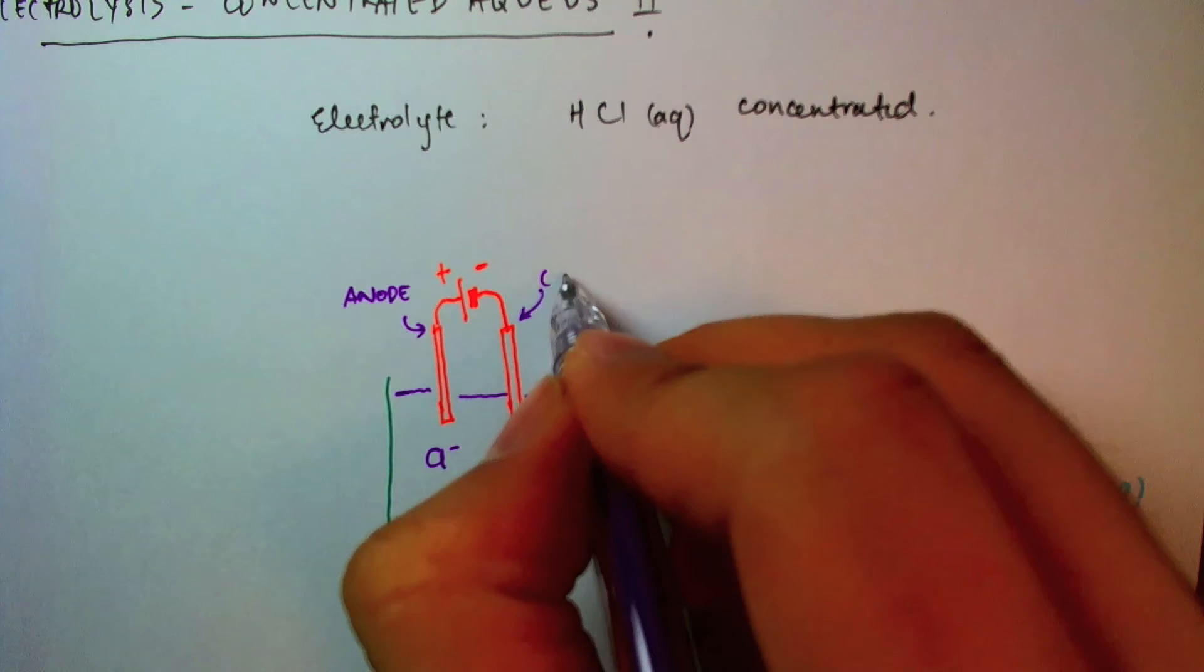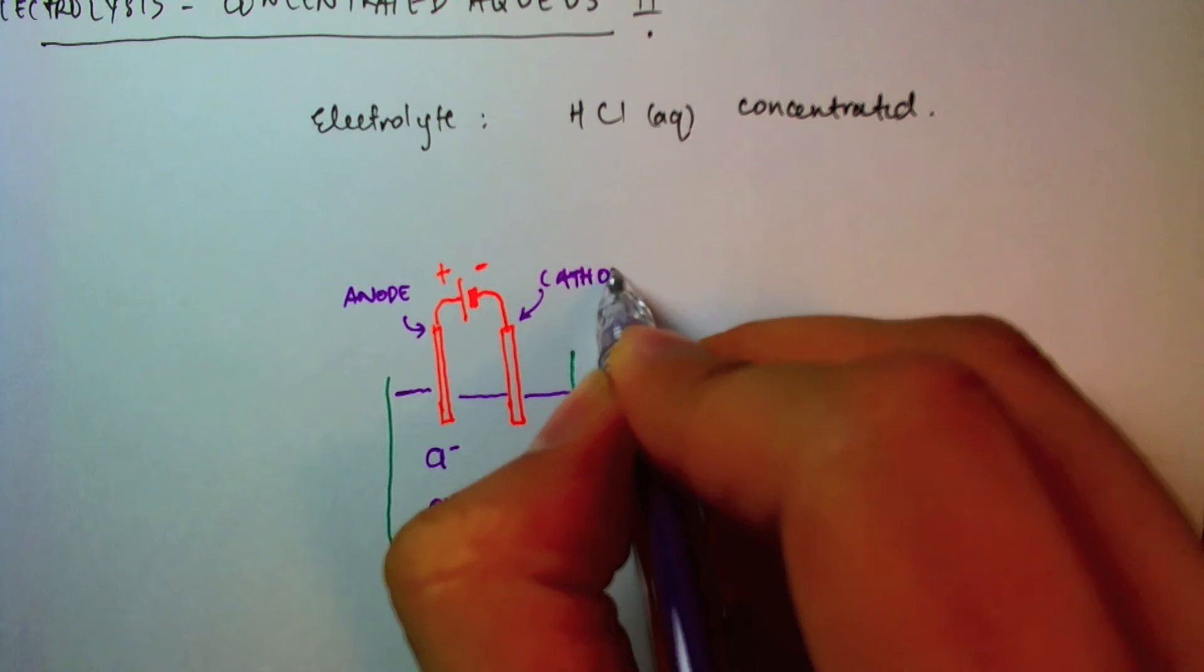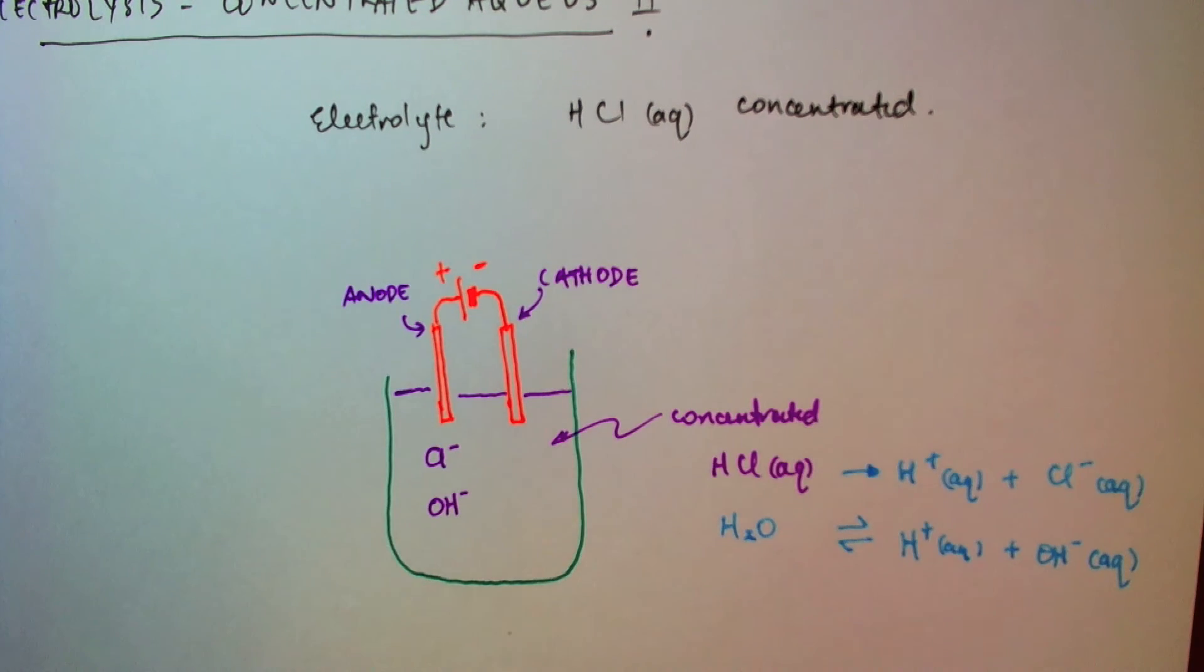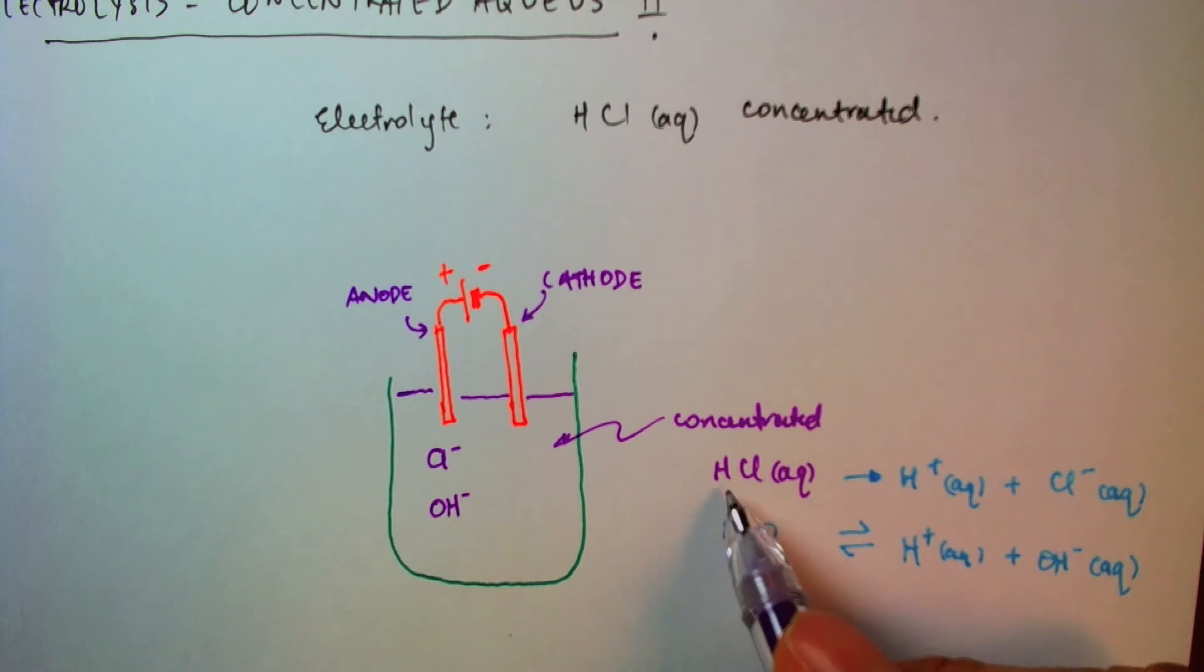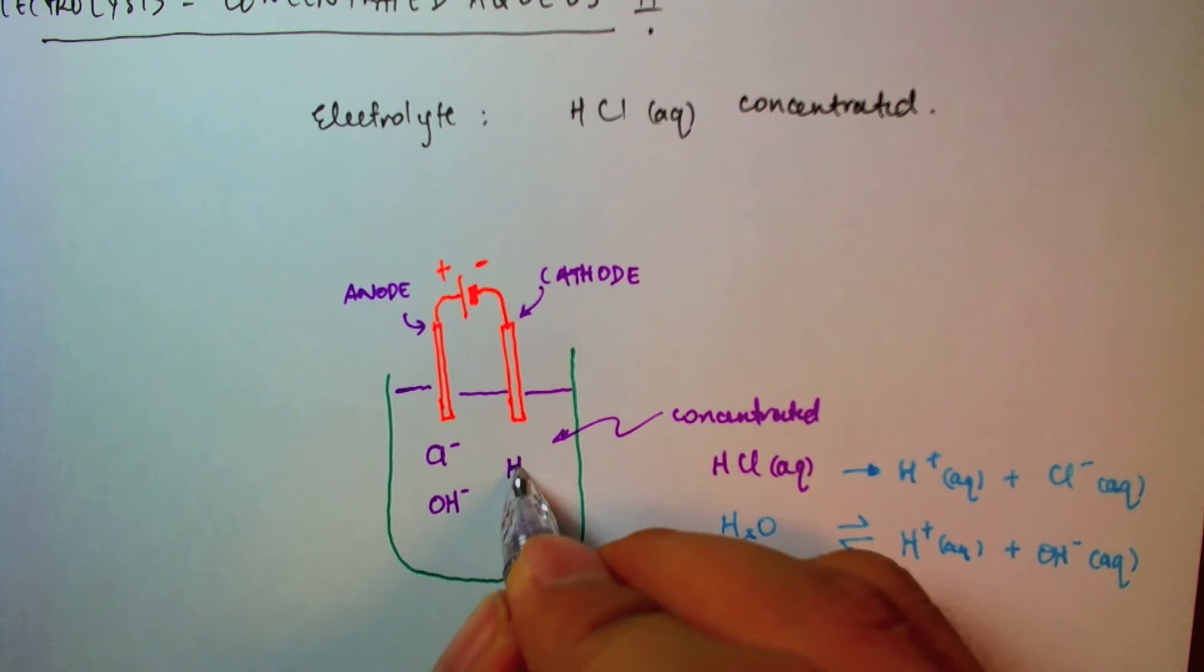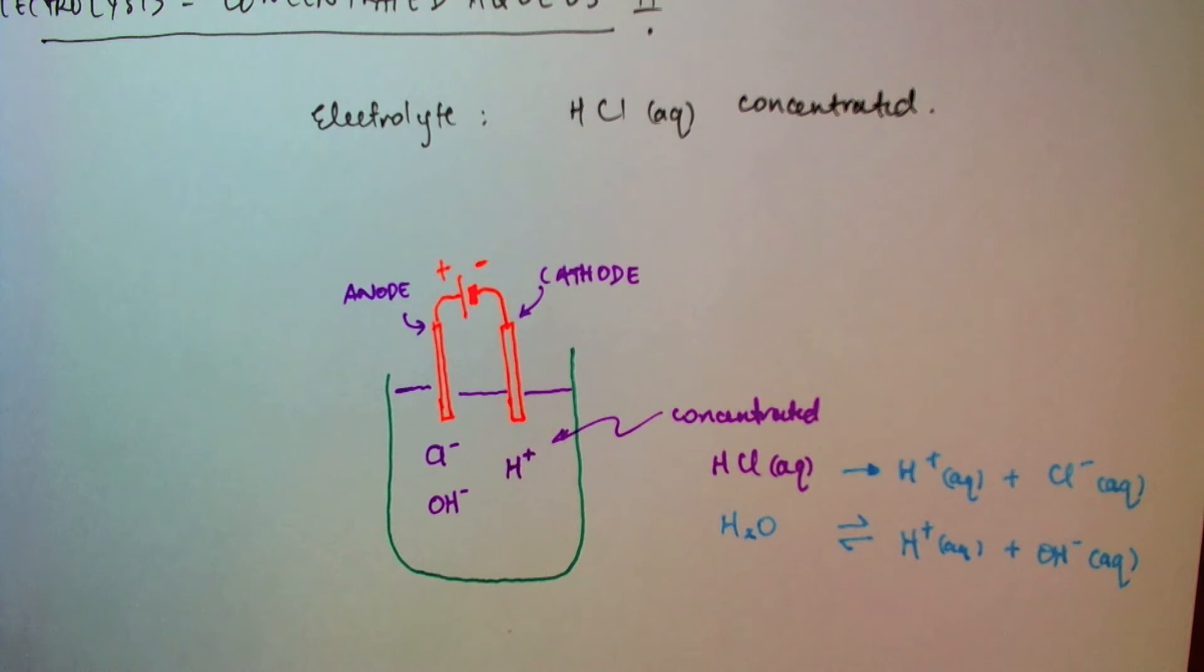And this is the cathode, the positive electrode. And now I have hydrogen ions from hydrochloric acid and hydrogen ions from water. So since both of these are the same, I'm just going to write them once. So below the cathode, we only have hydrogen ions.